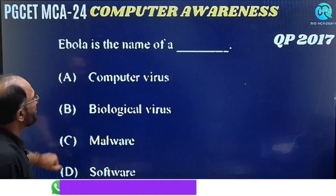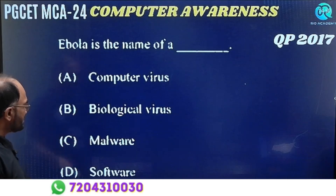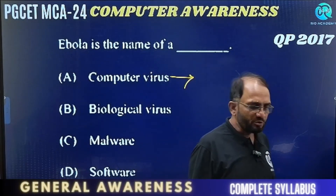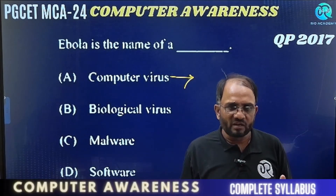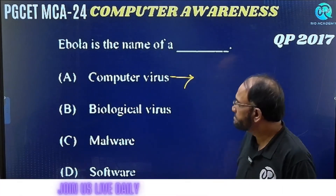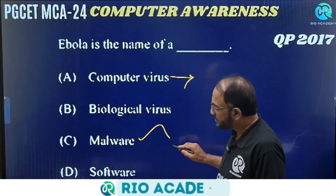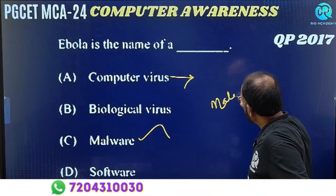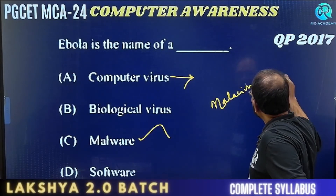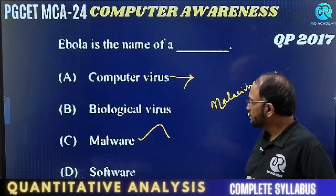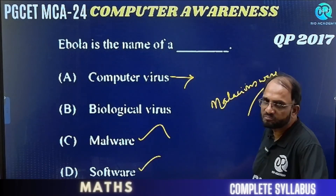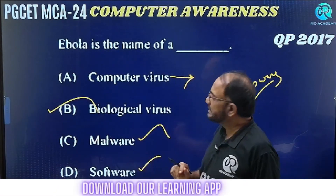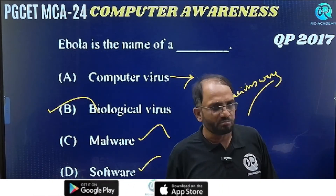Ebola — is it a computer virus, biological virus, malware, or software? We know computer viruses corrupt executable files in the system. Malware is malicious ware, a kind of software — a group of programs for a particular task. However, Ebola is a biological virus. It is not a machine virus or computer virus.